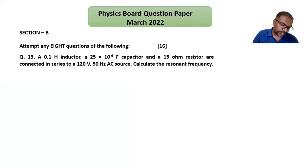Now let's see the solution. First we list the given values. Given: L is 0.1 henry, or you can write 1 × 10⁻¹ henry. Capacitor C is equal to 25 × 10⁻⁶ farad, and resistor is 15 ohm. The voltage and frequency are given but we don't require those.